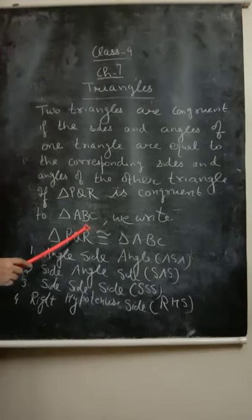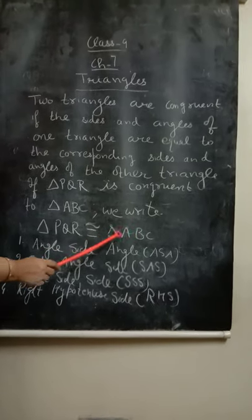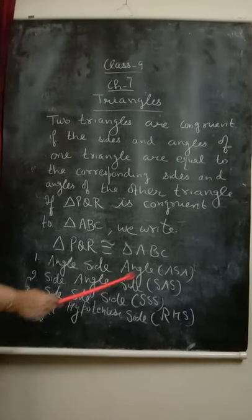Also, their corresponding sides will be equal and we write it as triangle PQR is congruent to triangle ABC.